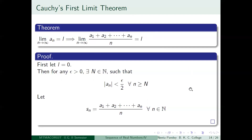None of these results today are straightforward — you have to be careful about how to proceed. We first prove the result for L = 0. Given limit of an = 0, for any epsilon > 0, there exists capital N such that for all n ≥ N, |an| < epsilon/2. The role of epsilon/2 is to make the final answer look clean.